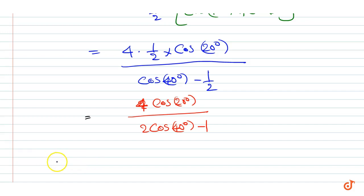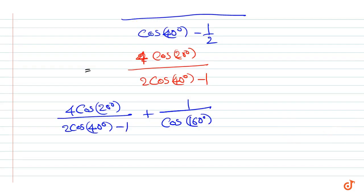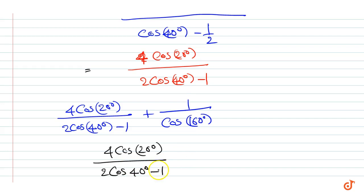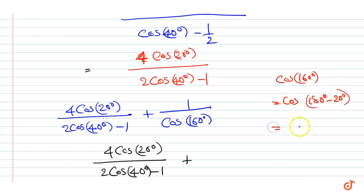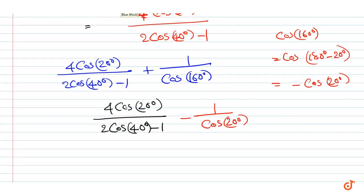Now the given expression is 4·cos(20°) / (2·cos(40°) − 1) plus 1/cos(160°). cos(160°) equals cos(180° − 20°) equals minus cos(20°). This is nothing but minus cos(200°), which can be written as cos(40°) − cos(80°).